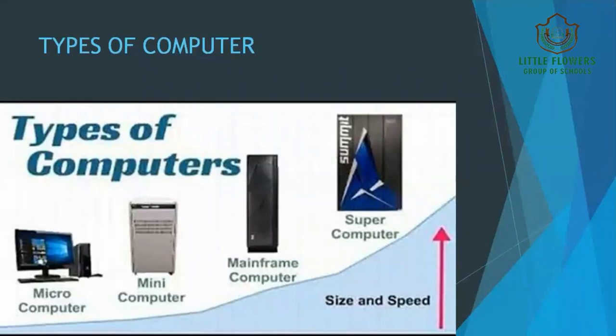Now we move to the types of computers. We have various types of computers that are used on the basis of their performance and capacity. Majorly, computers are of four types: first is the microcomputer, then minicomputer, then we have mainframe computer, and the last one is the supercomputer. Based on their size and speed, this is the division of computers.